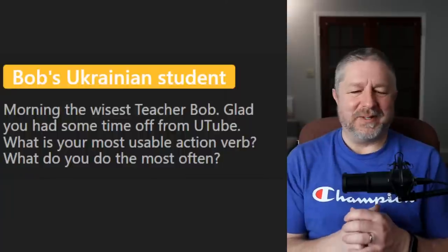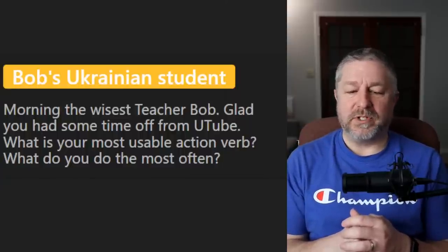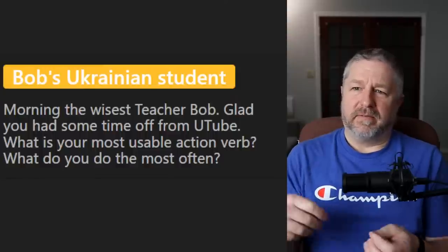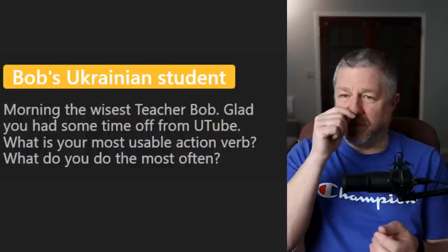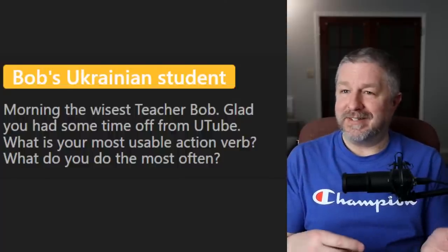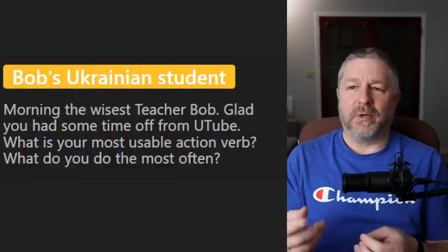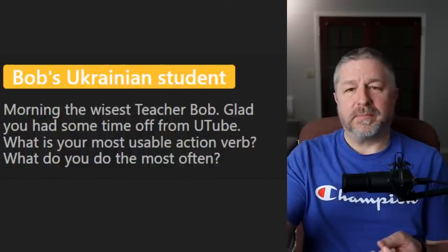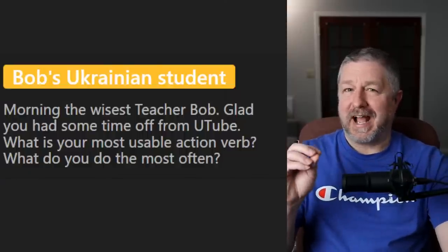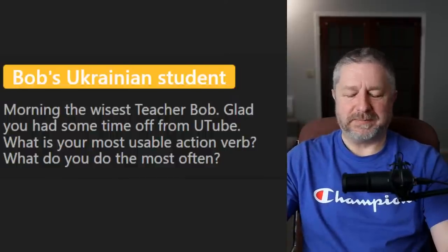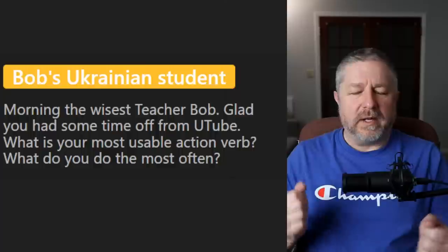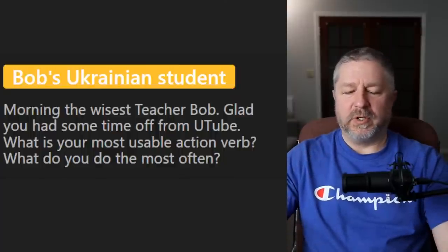Bob's Ukrainian student asks: 'what is your most usable action verb — what do you do the most often?' I think it's the verb 'to go.' We do use it as an action verb but we also use it to talk about the future: 'I'm going to eat pizza tonight,' 'I'm going to have a nap later today.' So we use 'to go' but not really as a pure action verb — we're using it to talk about the future. I would also say 'run,' like 'I'm going to run to the store' — even though run means to physically run, we use it to talk about going somewhere quickly.